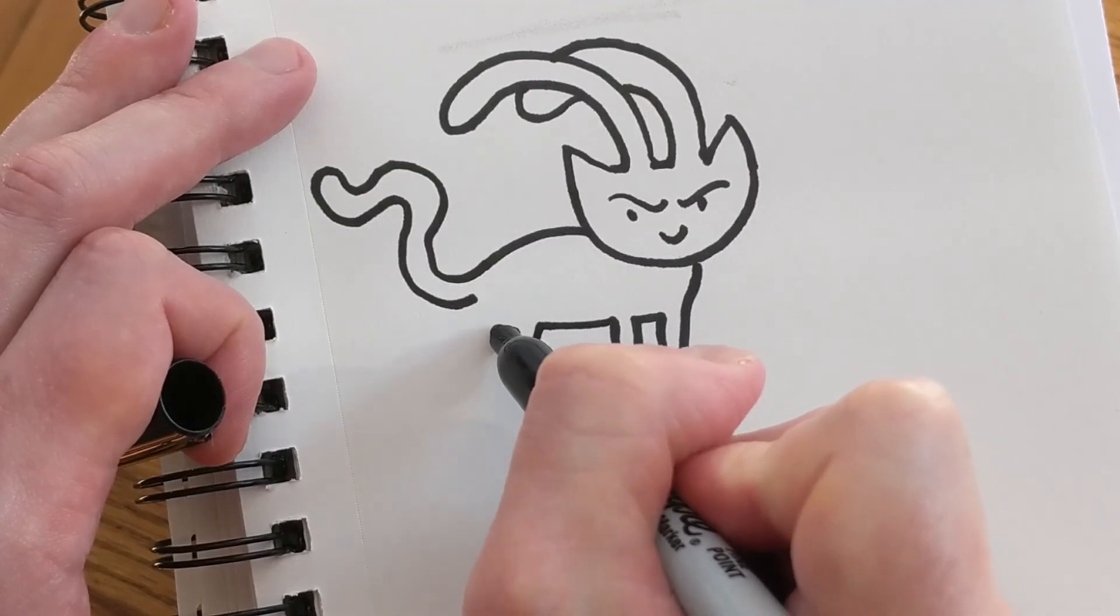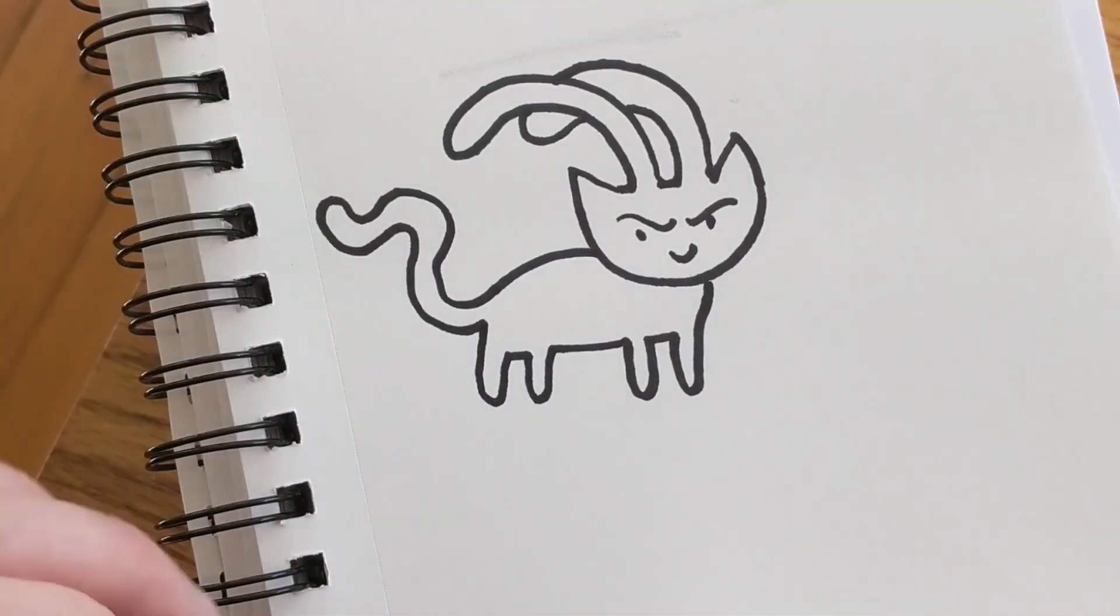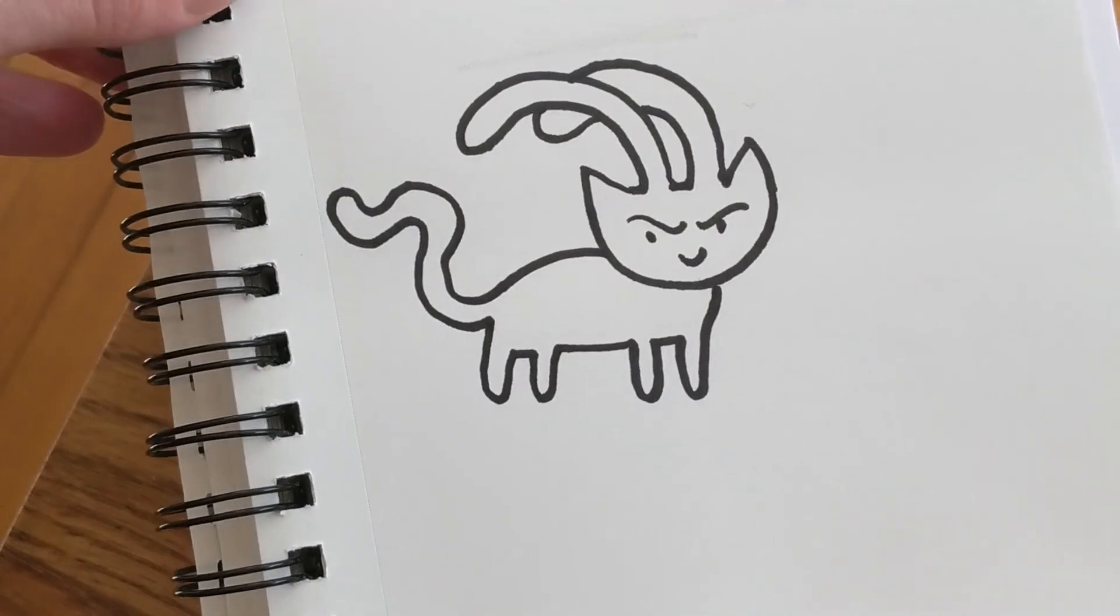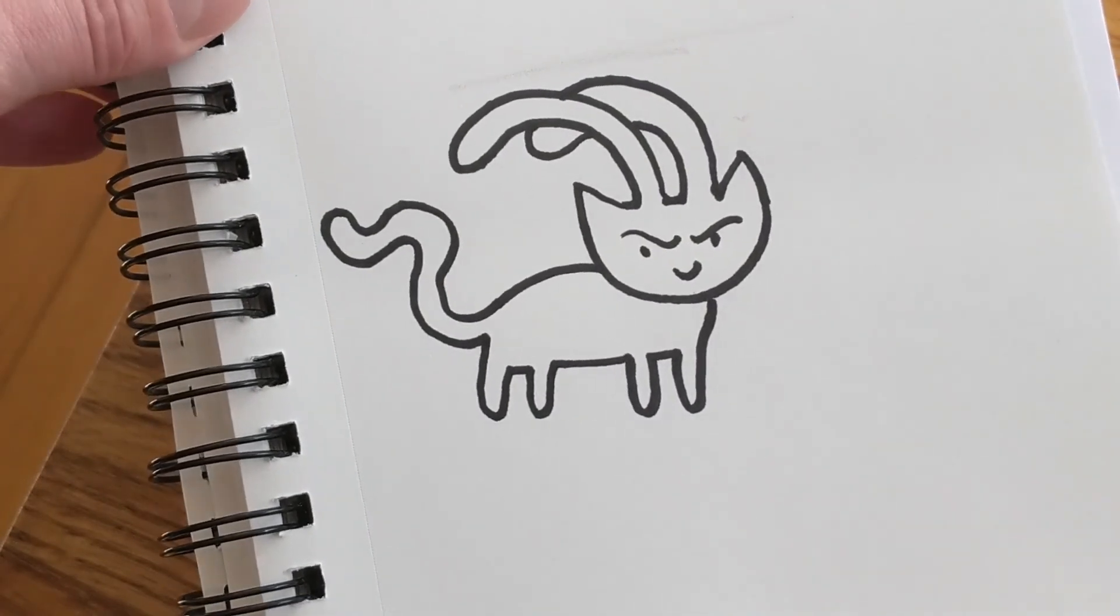And then I just draw her simple little legs. And that is Kitty Bunny. What do you think she's scheming now?